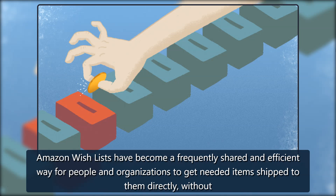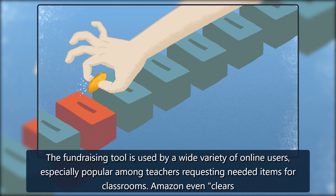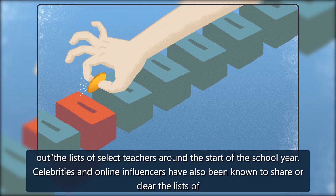Amazon wishlists have become a frequently shared and efficient way for people and organizations to get needed items shipped to them directly, without waiting for cash donations to come in or using their own time to purchase necessities. The fundraising tool is used by a wide variety of online users, especially popular among teachers requesting needed items for classrooms. Amazon even clears out the lists of select teachers around the start of the school year.